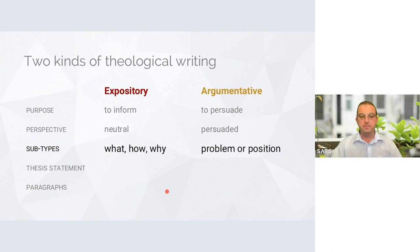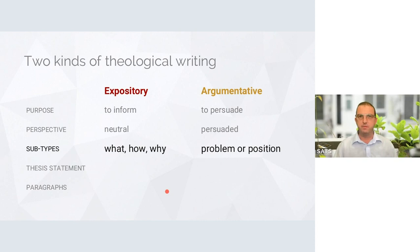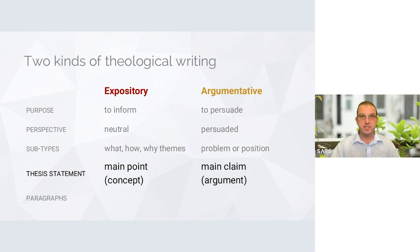Both of these have identifiable subtypes. I see three subtypes of expository writing depending on what kind of theme an essay unpacks — what, how, and why themes. Similarly, argumentative writing has two common subtypes: one tackles a problem and argues in favor of a preferred solution — a problem-solution framework — and the other enters an established debate and defends a particular position as best as possible.